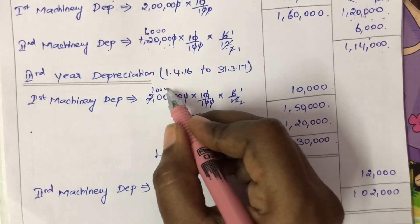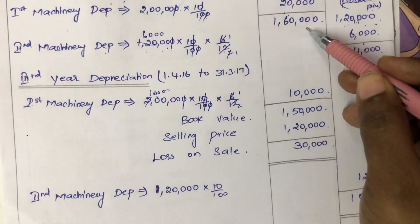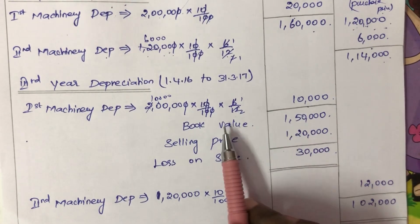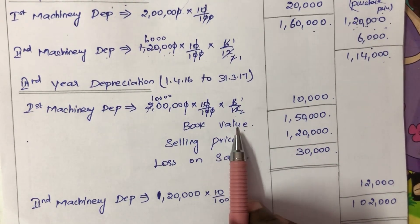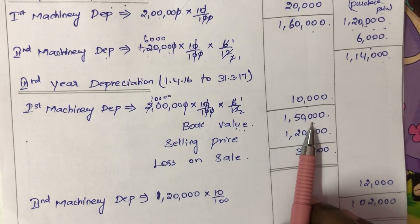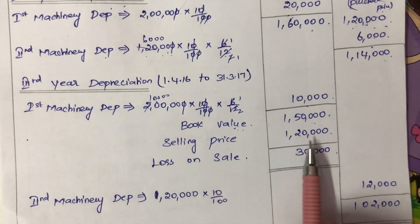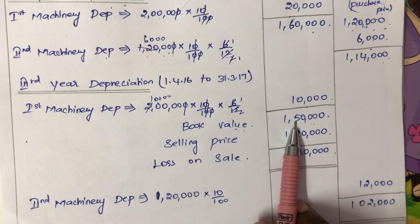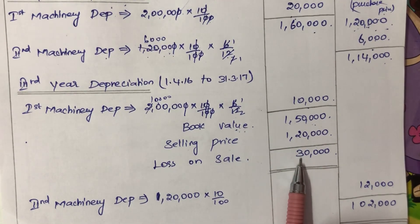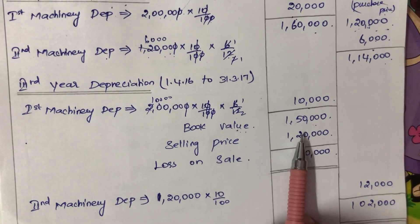At the end of second year: First machinery book value Rs. 1,60,000; Second machinery book value Rs. 1,14,000. Third year depreciation: 1-4-2016 to 31st March 2017. First machinery was sold in September 2016, so 6 months used: Rs. 2,00,000 into 10 by 100 into 6 by 12 equals Rs. 10,000. Book value: Rs. 1,60,000 minus Rs. 10,000 equals Rs. 1,50,000. Selling price was Rs. 1,20,000, so loss on sale is Rs. 1,50,000 minus Rs. 1,20,000 equals Rs. 30,000.